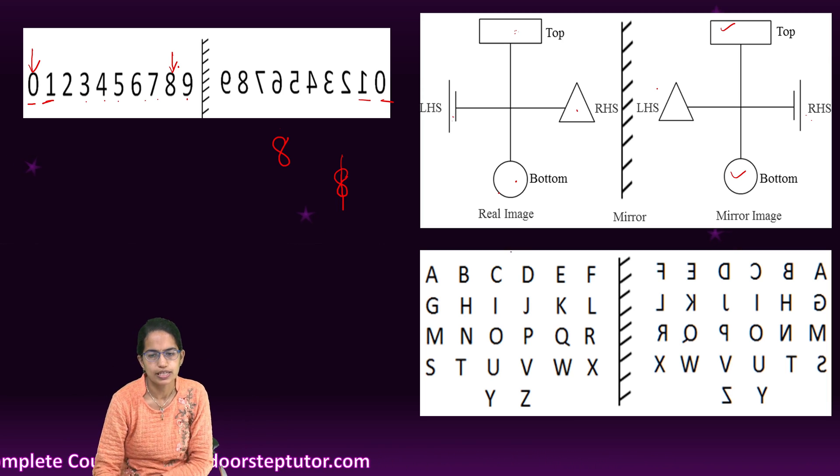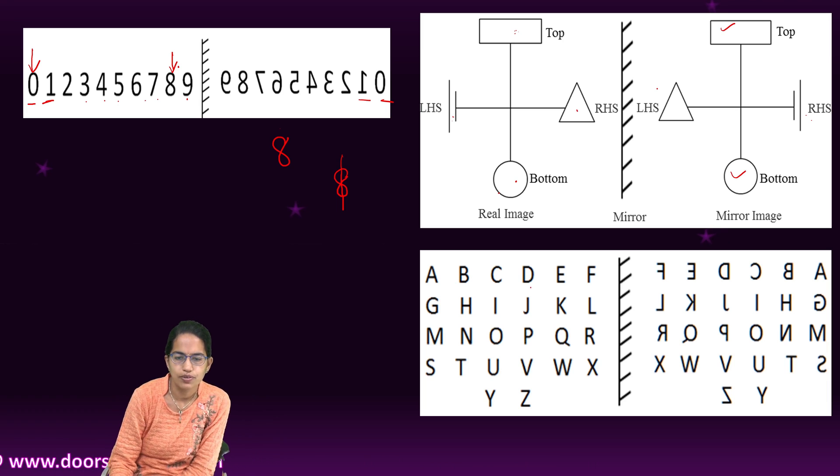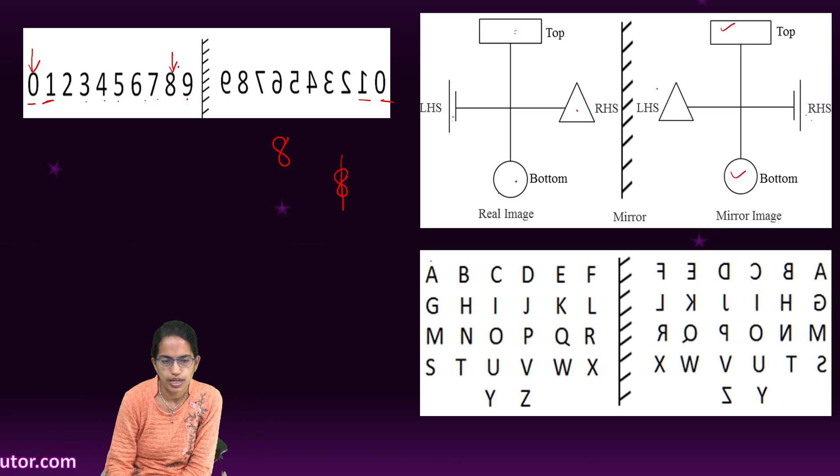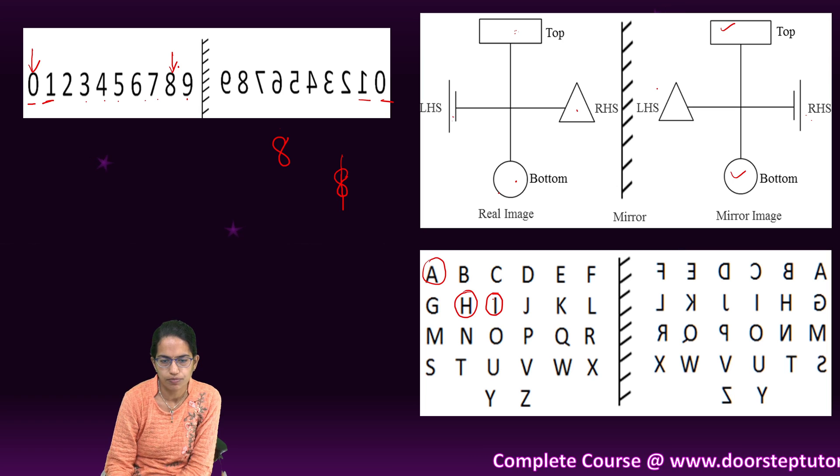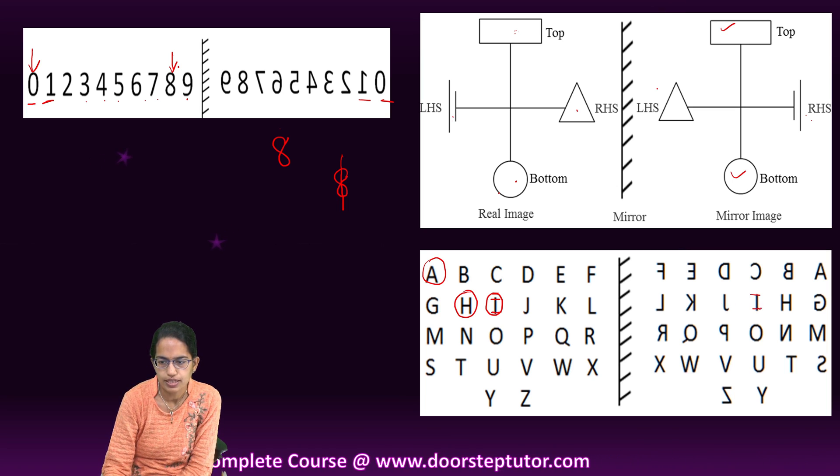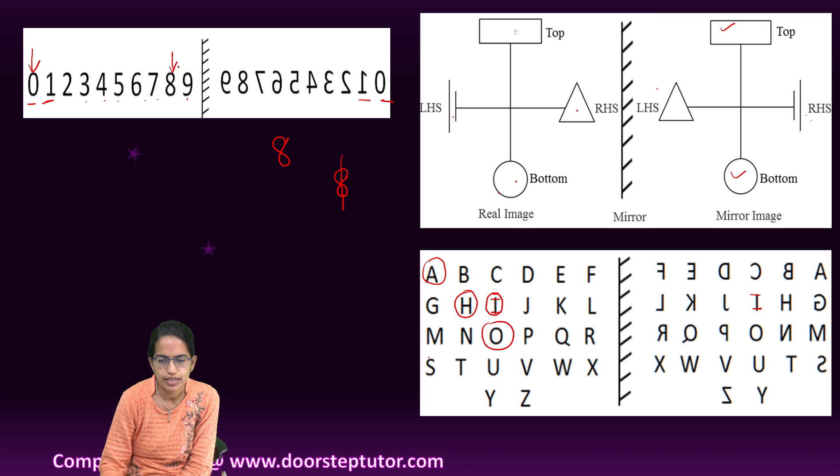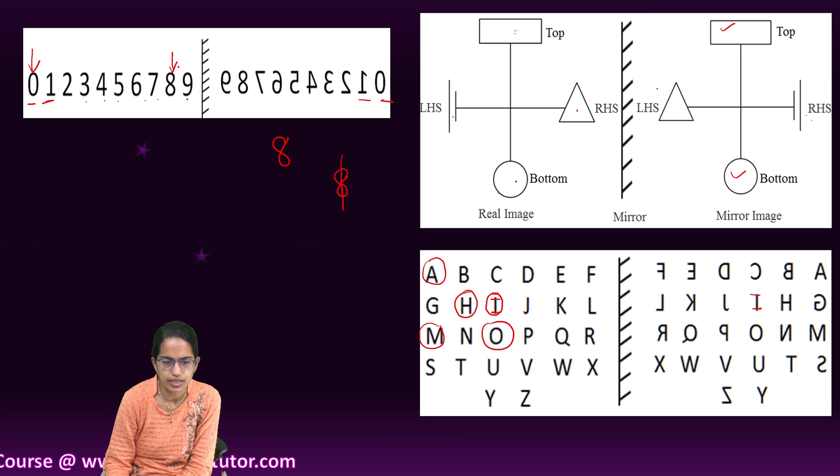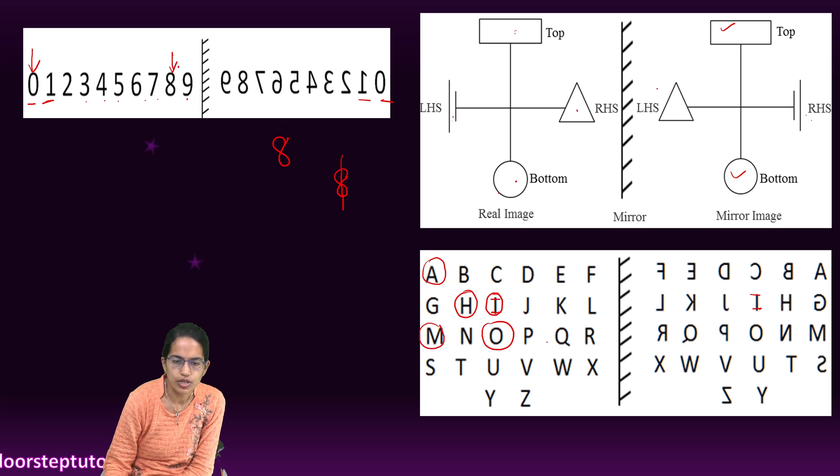And similarly I have A, B, C, D, E, F. So A remains same as it is. B, C, D, E and F would change. H would remain as it is. If it is this I, it would remain same. O would remain the same, M would remain the same, and then we would have P, Q, R that would change.